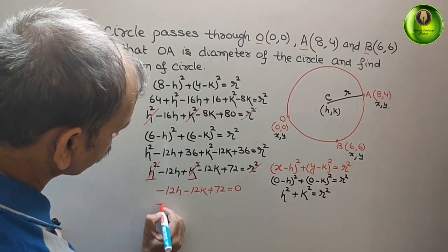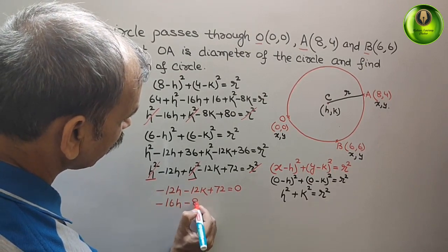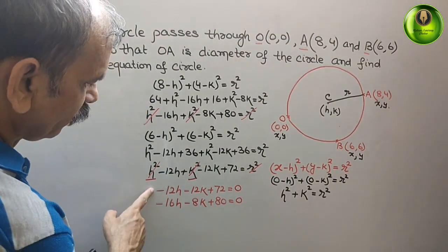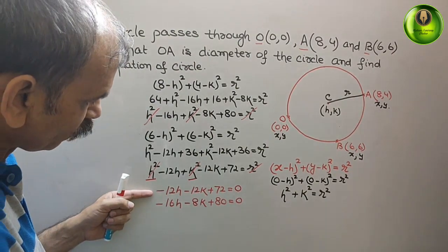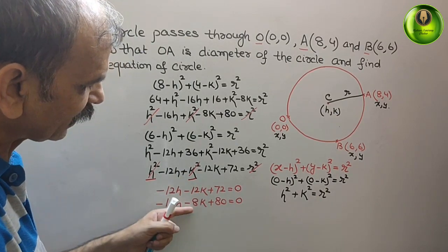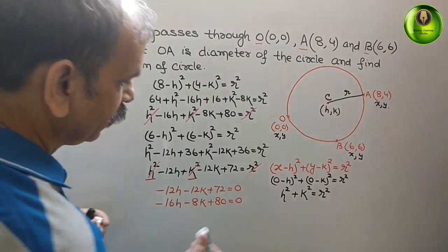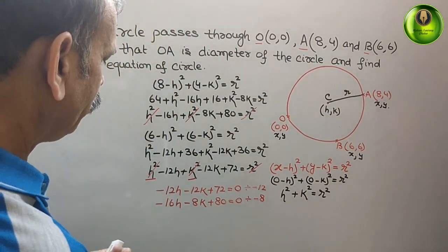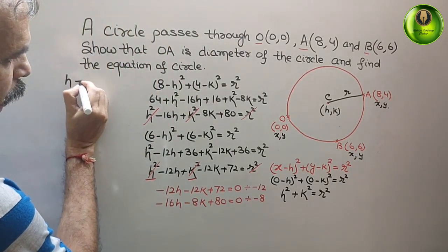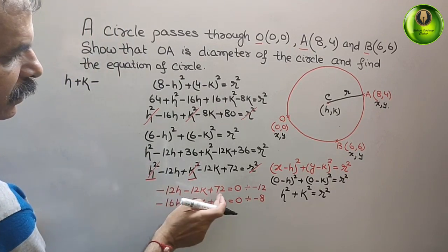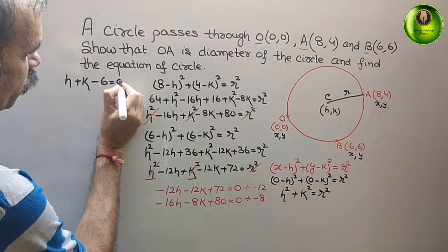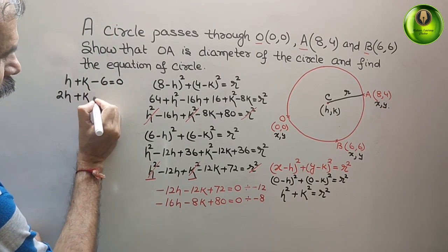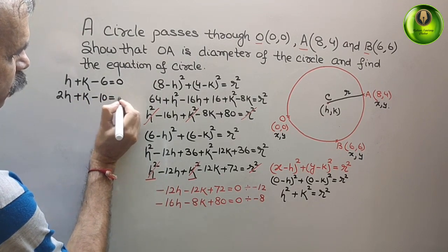So here your two equations are: -16H - 8K + 80 = 0, and -12H - 12K + 72 = 0. Dividing the second by -12 gives: H + K - 6 = 0. Dividing the first by -8 gives: 2H + K - 10 = 0.